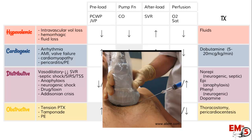Lastly, for obstructive shock — if a patient has a pericardial effusion and tamponade, for example — you need to do a pericardiocentesis. These are the types of patients you're either going to be doing a procedure on or calling for help from surgeons or your cath lab.